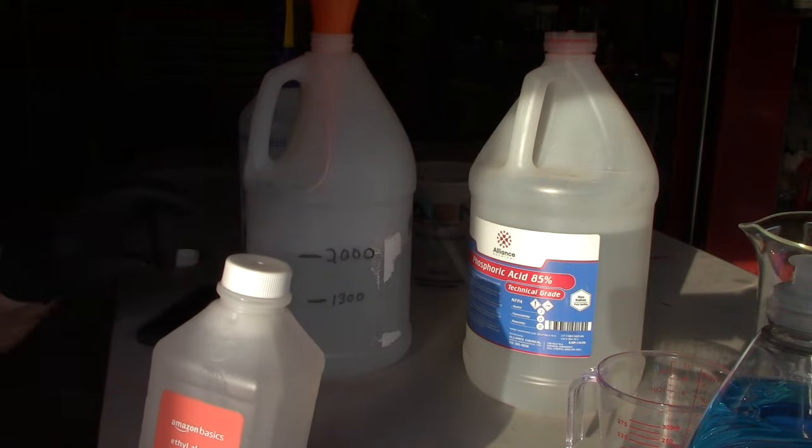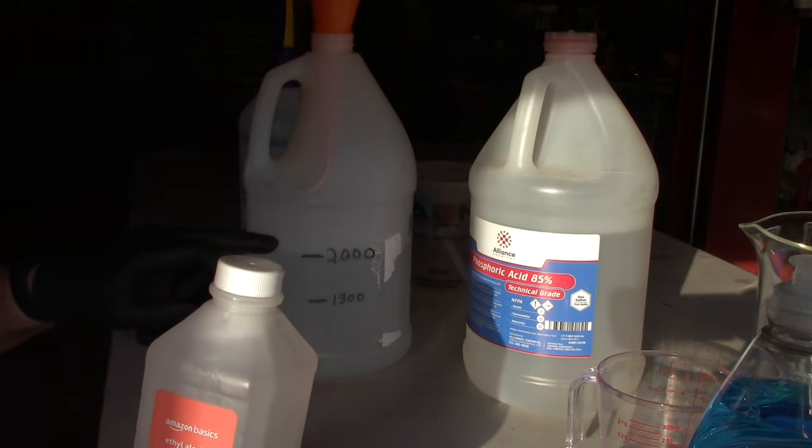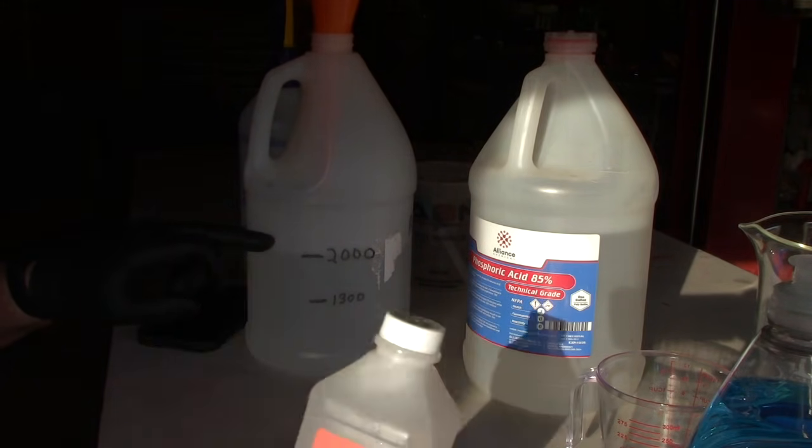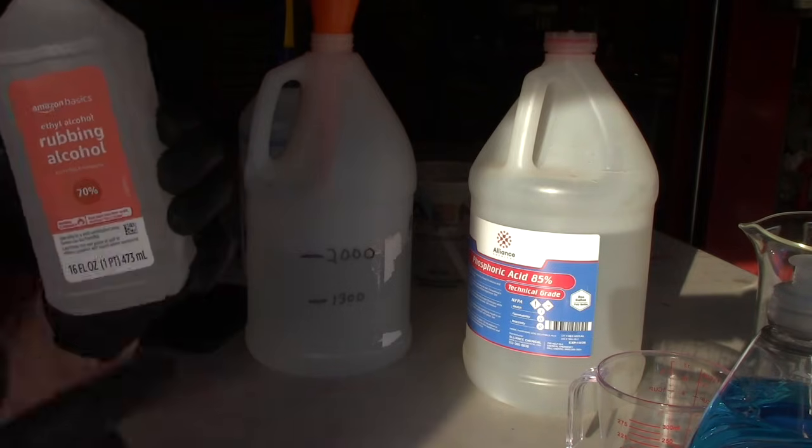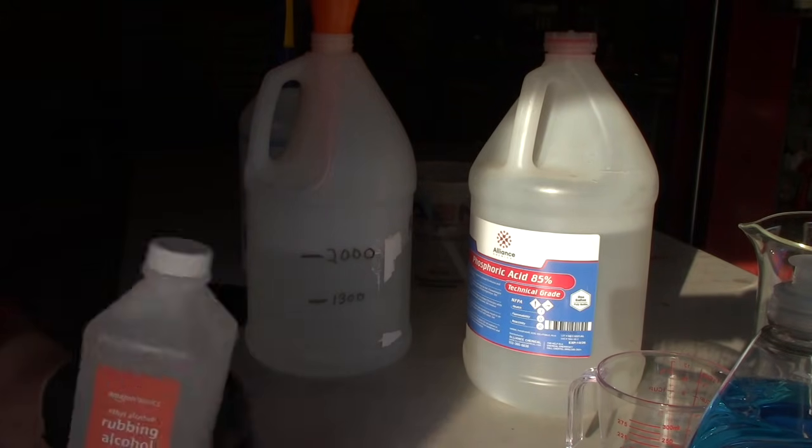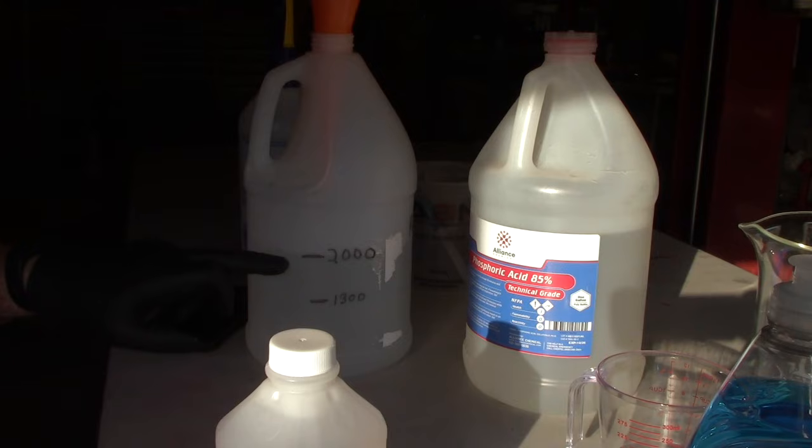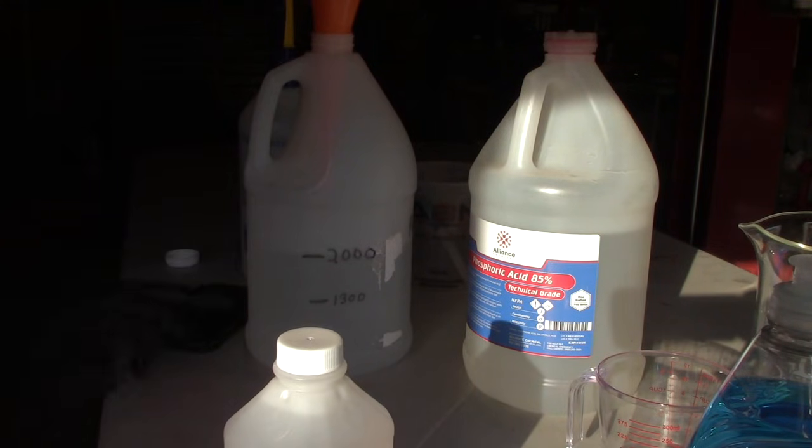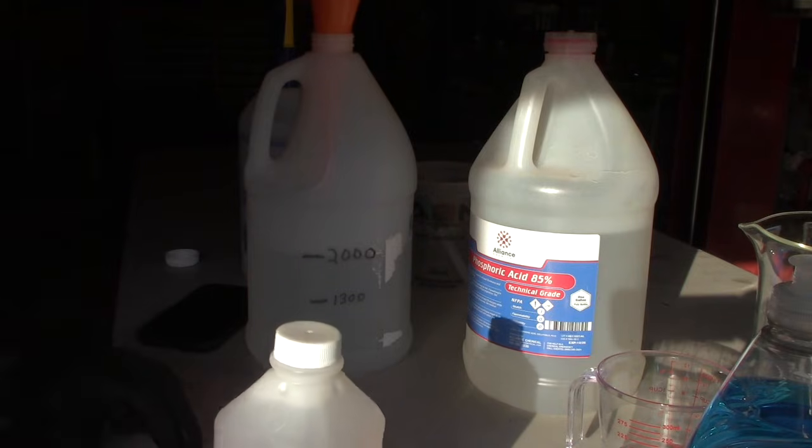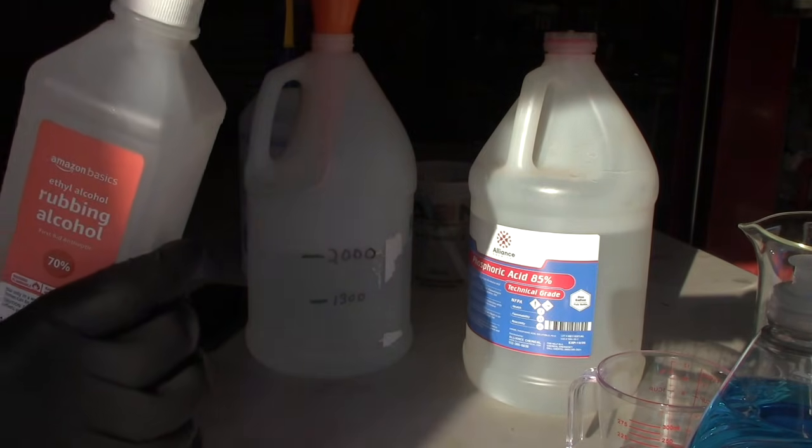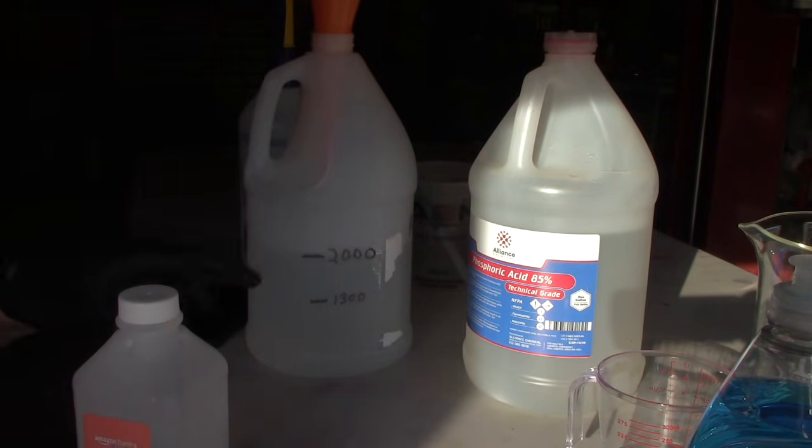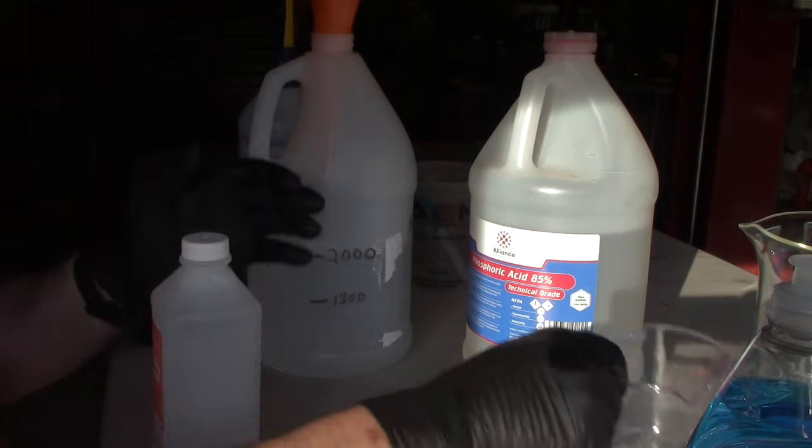But the ratio of alcohol to the solution is 20 parts of the solution to one part alcohol, 20 to 1. All right, so we got 2000 milliliters, so the 20 to 1 ratio would be 100 milliliters of the alcohol to the two liters.